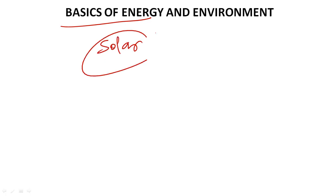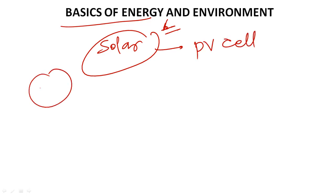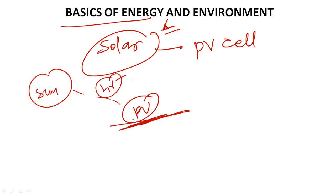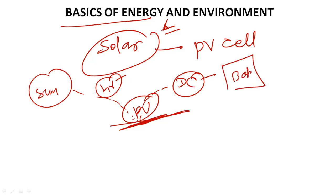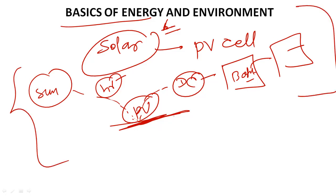Solar energy is a very important topic for your UPSC exam. In solar energy, we have PV cells. When sunlight hits the PV cells — which are basically semiconductor devices — they convert photons (light energy) into DC current. We store this DC current in batteries, and from batteries we use this electrical power. This is the basic fundamental principle of electricity generation by solar energy.